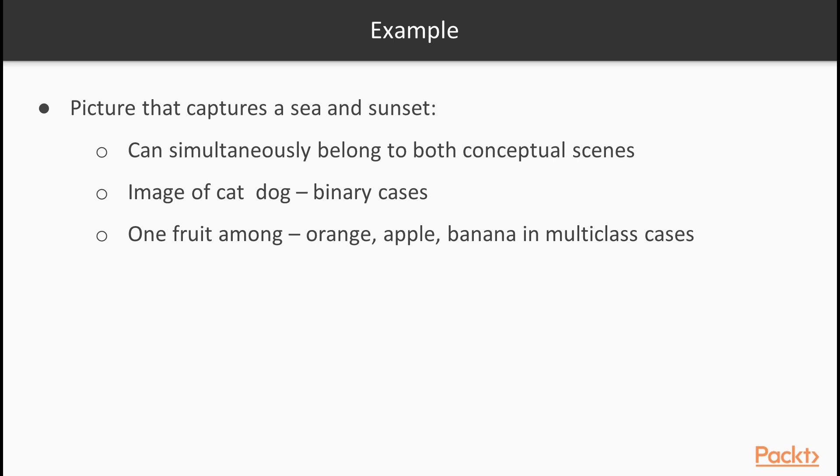Multi-label classification is different from the first two types of classification where target classes are disjointed. For example, a picture that captures a sea and sunset can simultaneously belong to both conceptual scenes, whereas it can only be an image of either a cat or dog in binary cases, or one fruit among orange, apple and banana in multi-class cases.